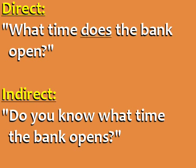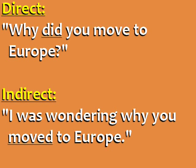Direct: 'What time does the bank open?' Indirect: 'Do you know what time the bank opens?' In indirect questions, we don't use auxiliary verbs like do, does, or did. Also, in the indirect question, we say 'the bank opens.' Direct: 'Why did you move to Europe?' Indirect: 'I was wondering why you moved to Europe.' Again, there's no auxiliary verb 'did' in the indirect question. As a result, we say 'moved' instead of 'move.'